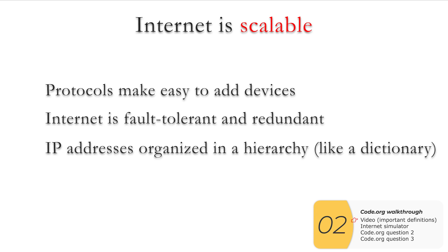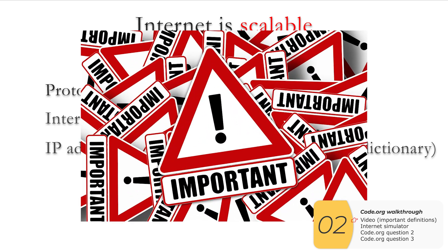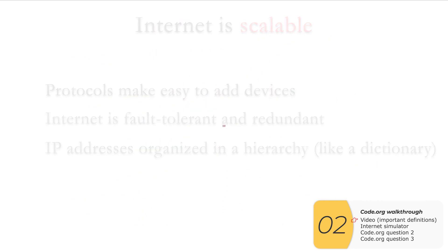So here are three examples of the internet being scalable. It just means it can grow to large numbers, and it is a topic that's on the AP CSP exam.